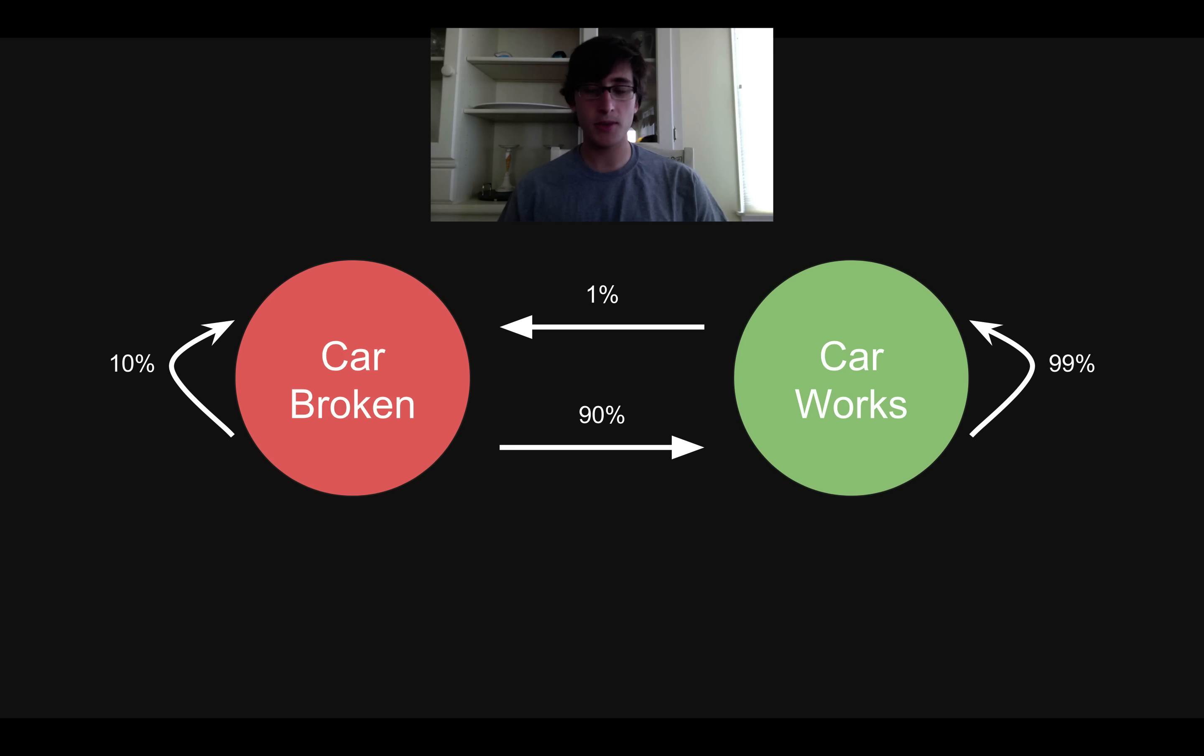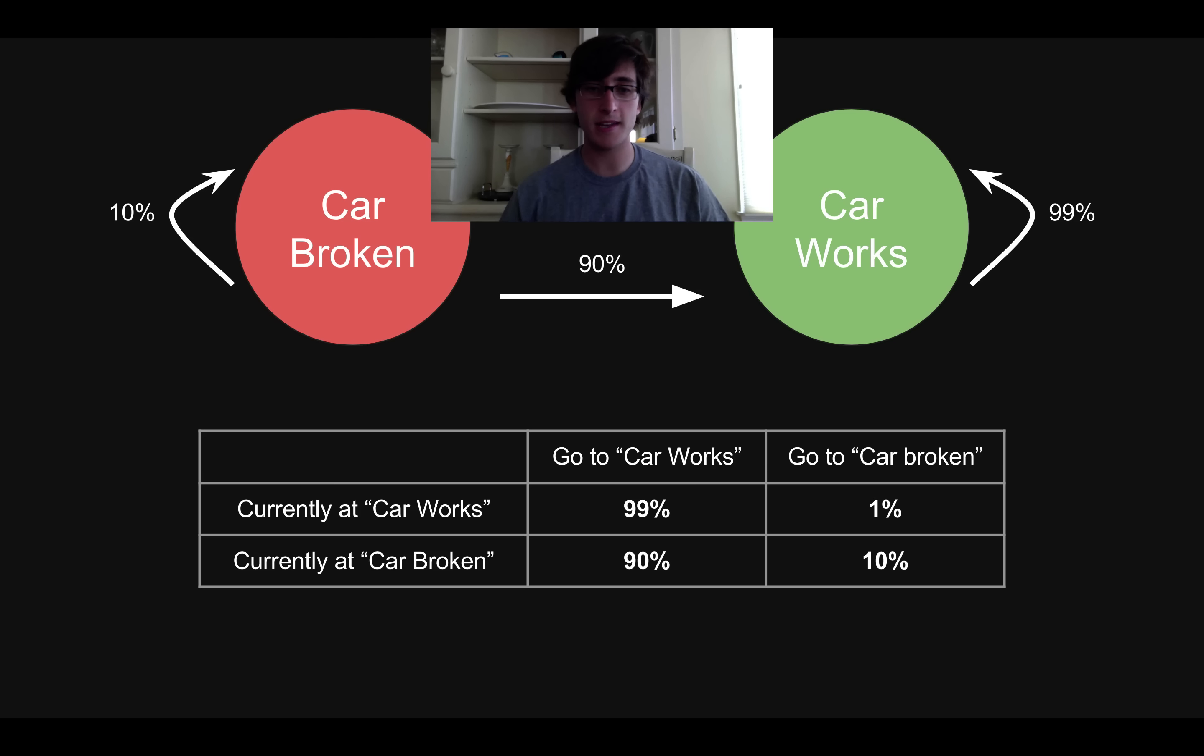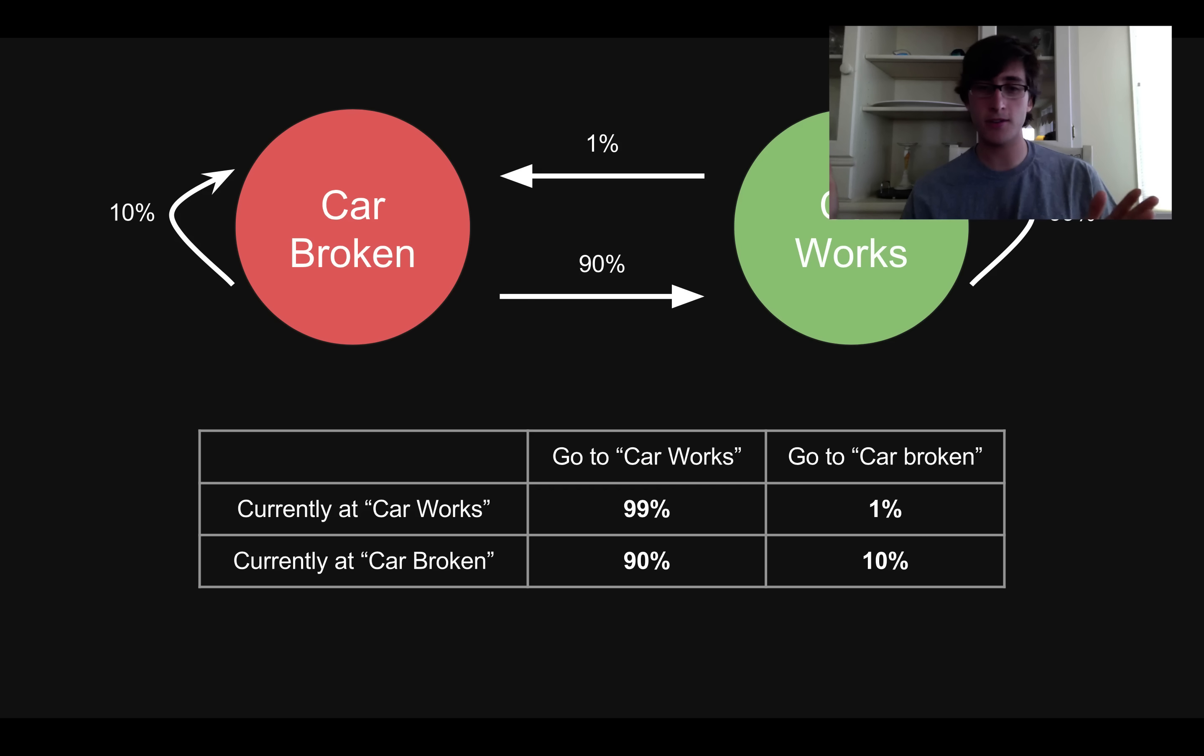And finally, one last thing we can do is we can represent this Markov chain instead of by using like these arrows and these circles, we can also represent it as a table. And in this case, I've chosen to make the rows the state you're coming from and the columns the state you're going to. So if currently my car is broken and I want to know the odds that it will stay broken, I would look at the bottom right corner of this table in this case. So this is just another way I can write down a Markov chain. I can just write it down as a table or as a matrix.